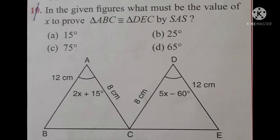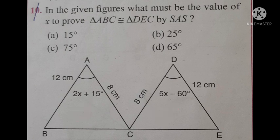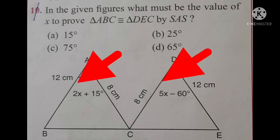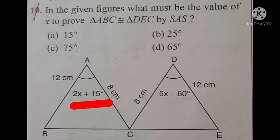Our next sum is: in the given figures, what must be the value of X to prove triangle ABC is congruent to triangle DEC by SAS? Here you see there are two triangles, triangle ABC and triangle DEC. AB equal to DE equal to 12 cm, and AC equal to DC equal to 8 cm. As triangle ABC is congruent to triangle DEC by SAS, it can be said that angle BAC is congruent to angle CDE. Here, angle BAC equal to 2x plus 15 degrees, and angle CDE equal to 5x minus 60 degrees.